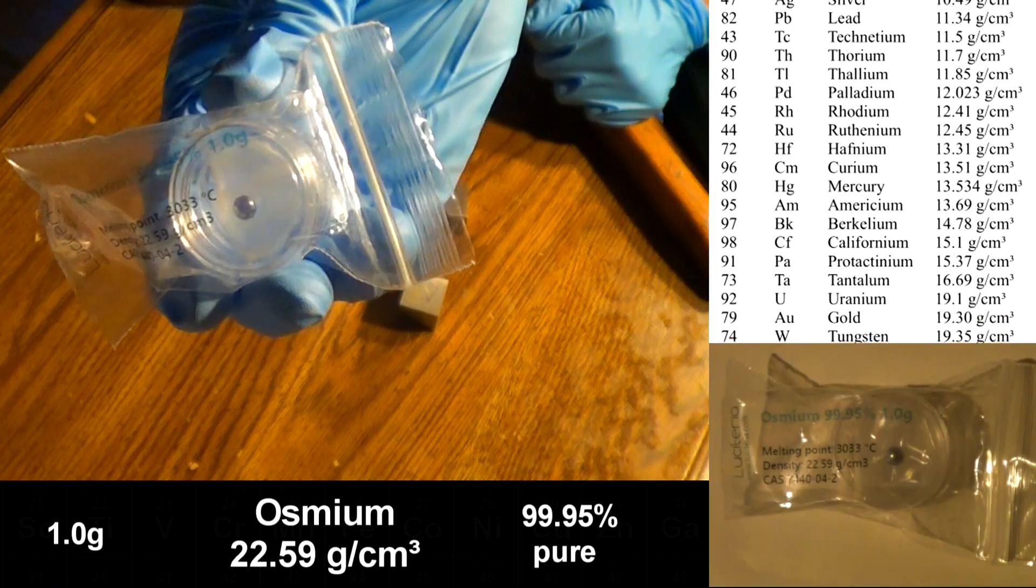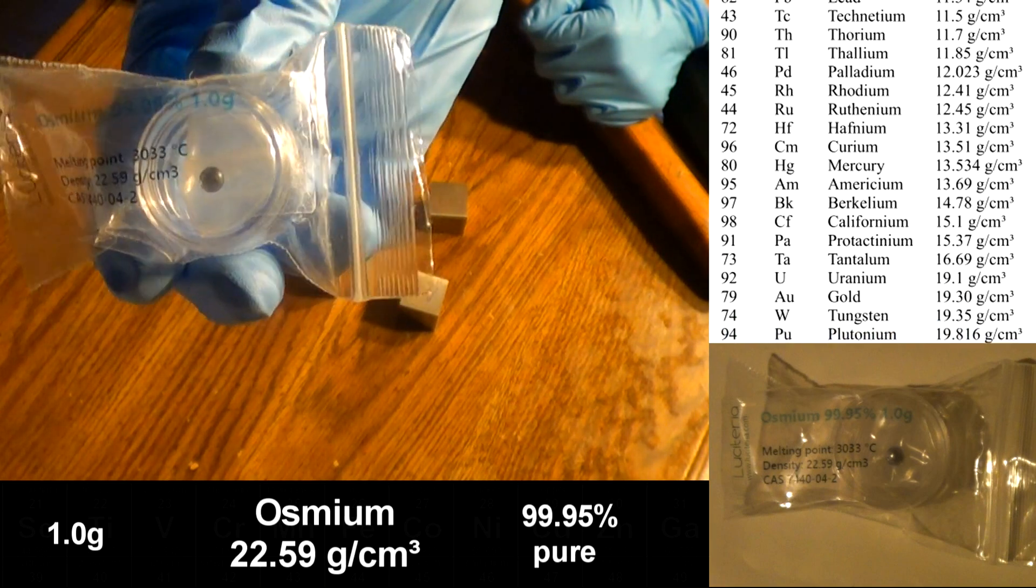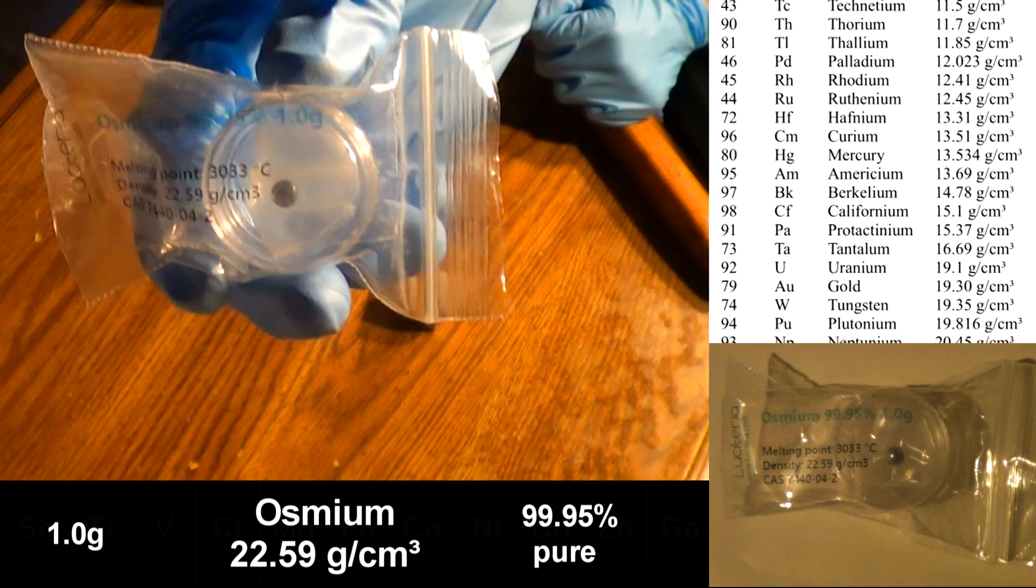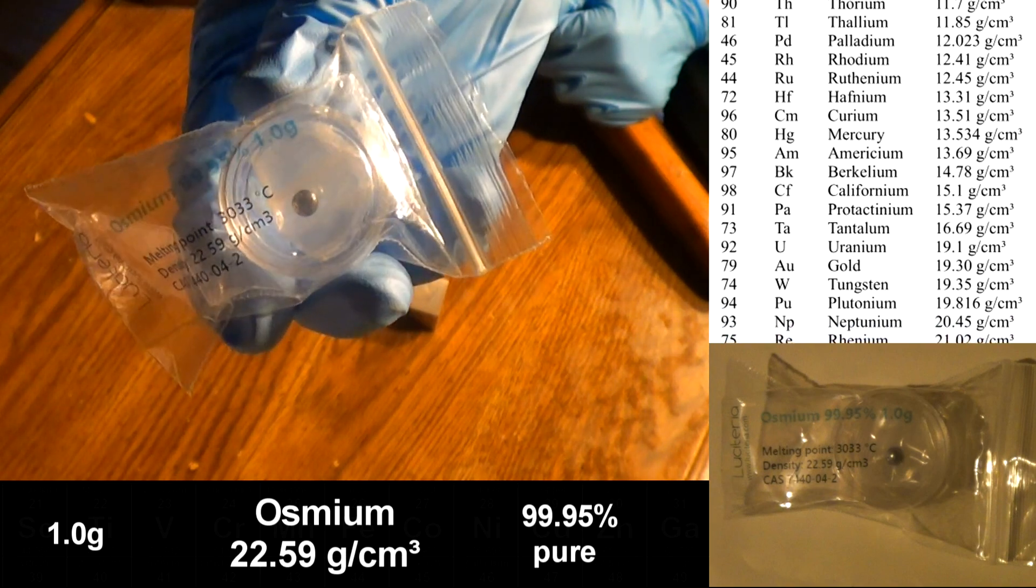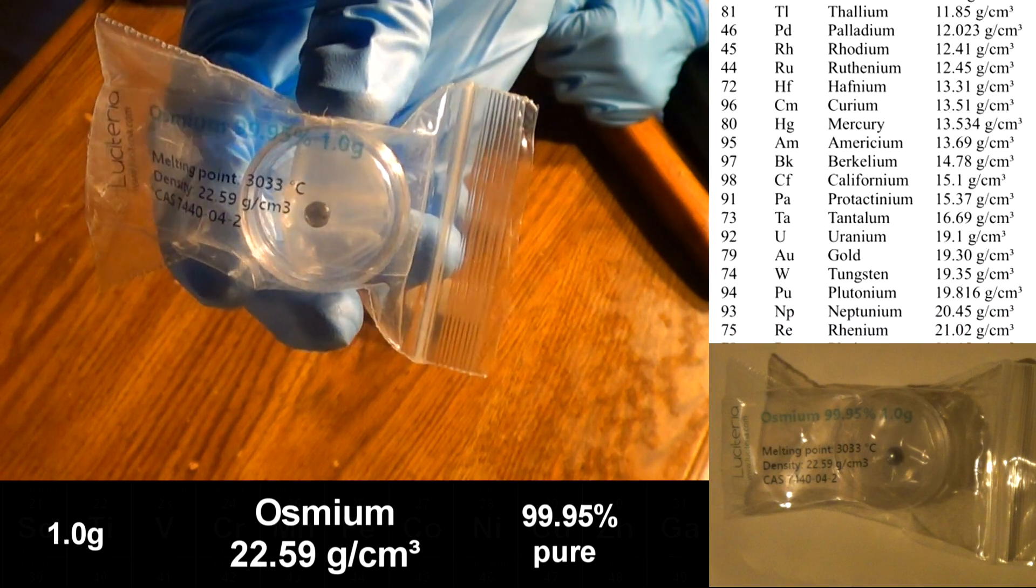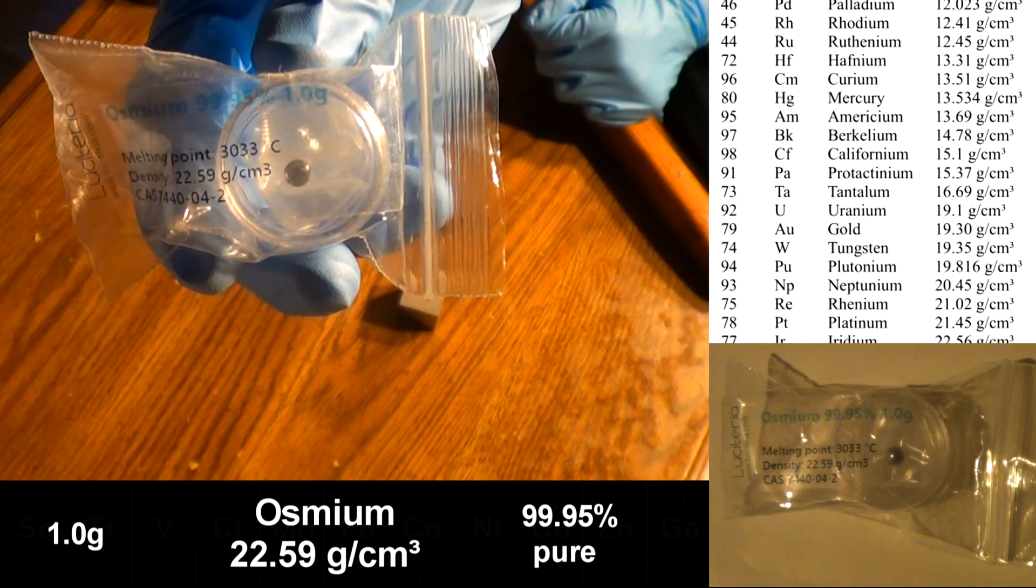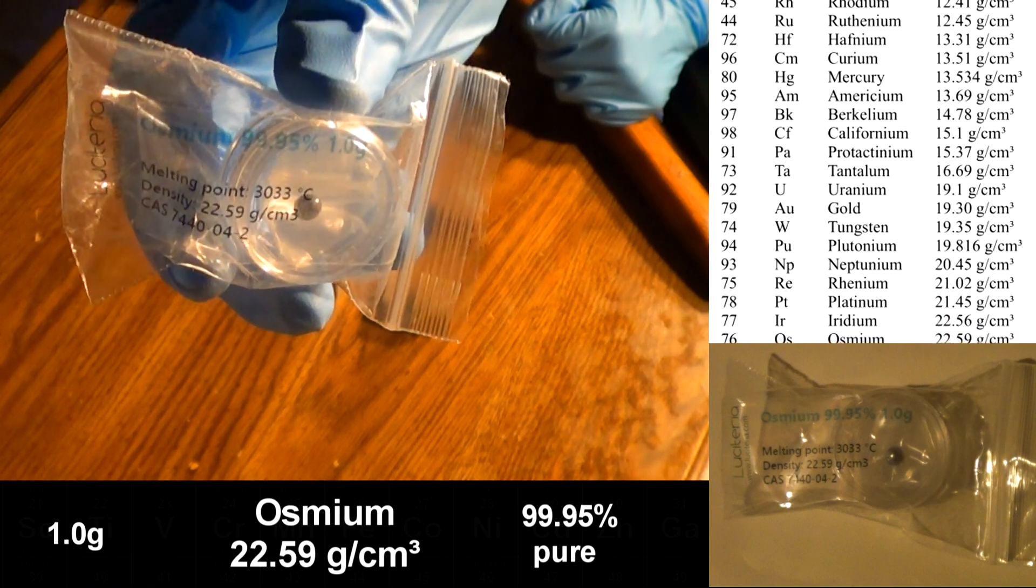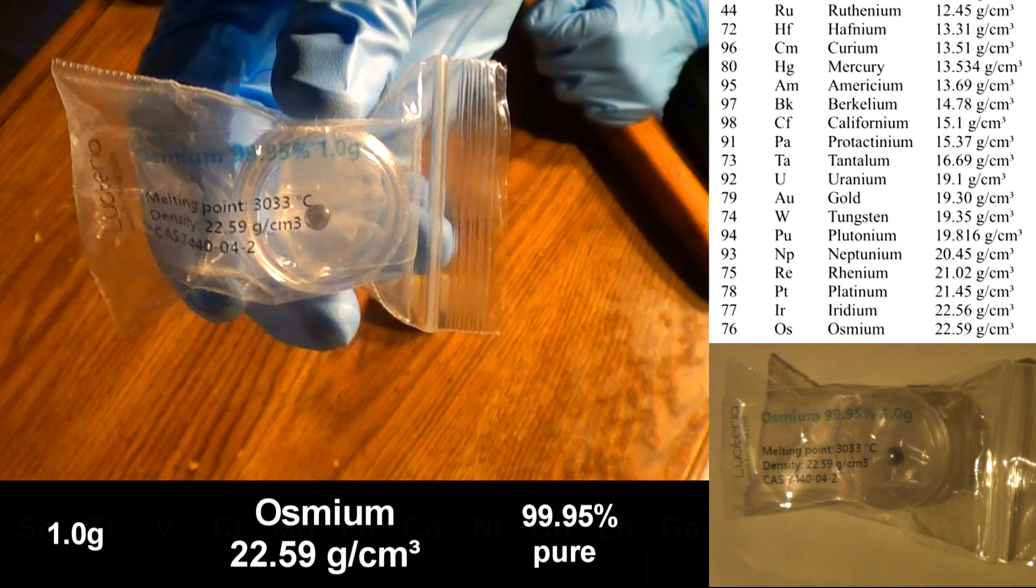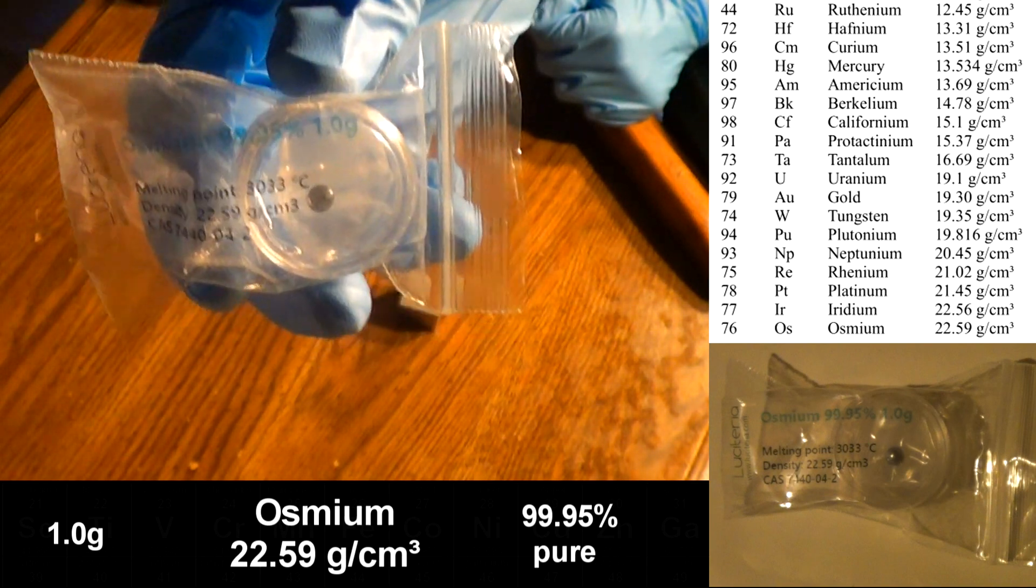Pure metallic osmium is harmless, but when it reacts with oxygen, it forms osmium tetroxide, which is very toxic. So it's staying inside the plastic bag, inside the plastic container, inside the plastic bag, just in case. It is 22.59 grams per cubic centimeter, which is just a tiny bit heavier than iridium, which means that osmium here is the heaviest stable element in terms of density.